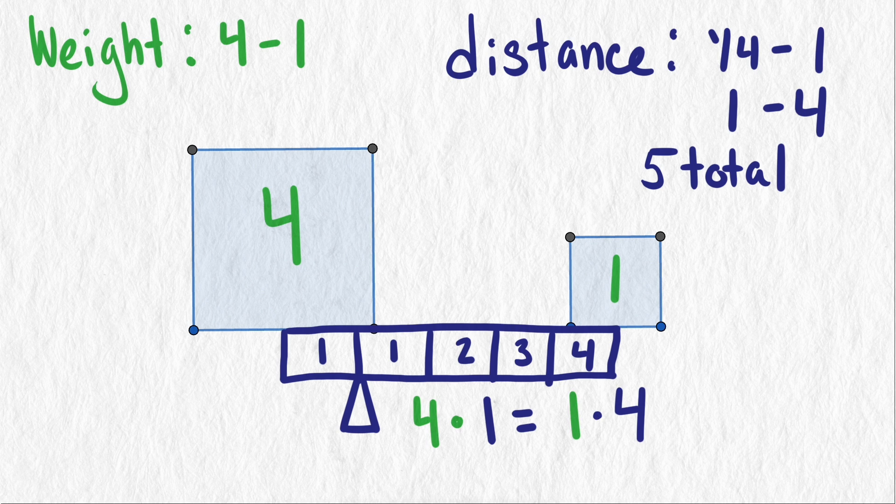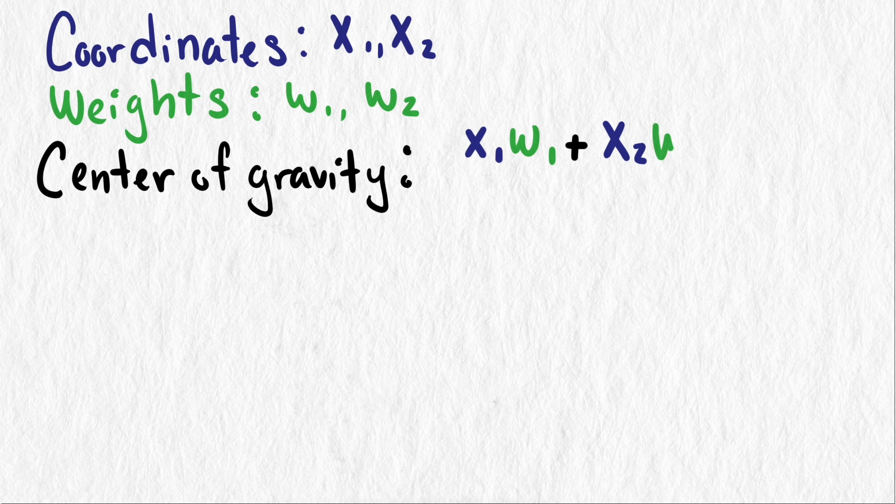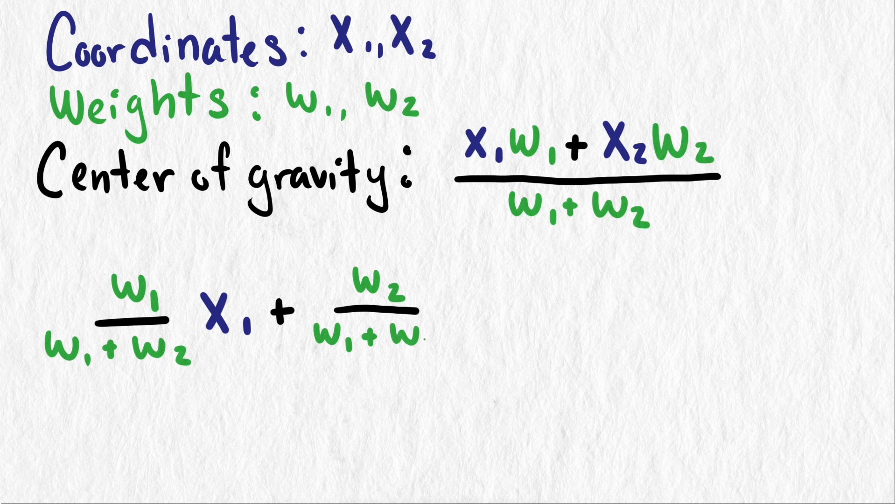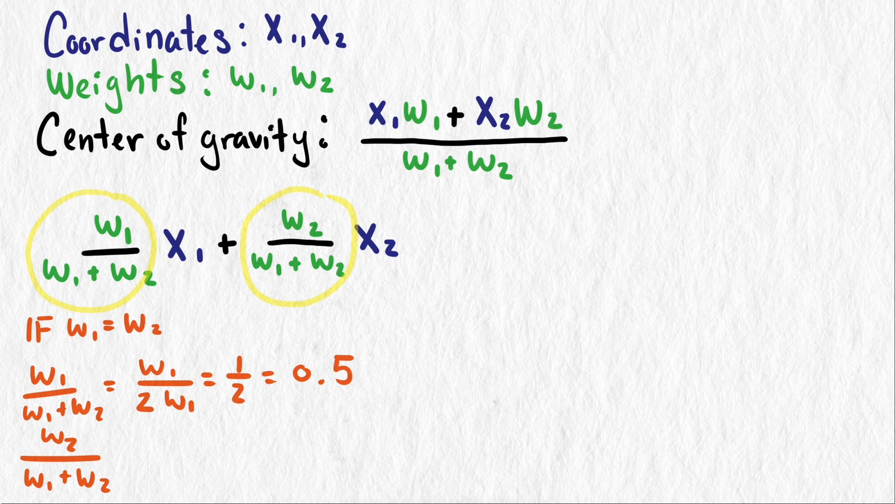This law of Archimedes can also be thought of as a weighted average. If we have two coordinates, say x1 and x2, and they have weights w1 and w2 respectively at those coordinates, then the center of gravity would be x1 times w1 plus x2 times w2, all divided by w1 plus w2. Or written another way, w1 divided by w1 plus w2 times x1 plus w2 divided by the quantity w1 plus w2 times x2. Now we can interpret these two sections of the expression as the proportion each object is of the total weight.